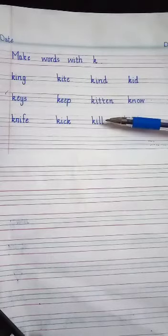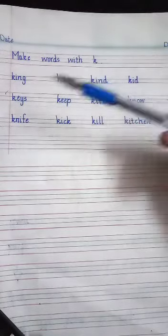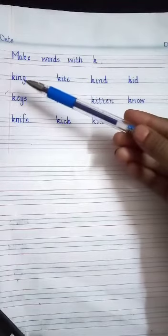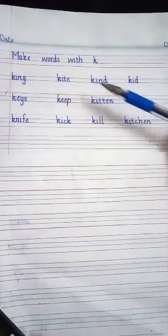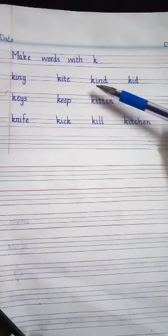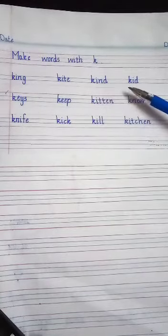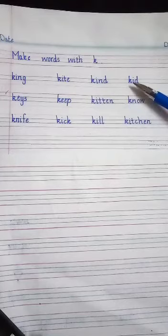Then, I have written some words for you. Let's read the words. King. K-I-N-G. King. Kite. K-I-T-E. Kite. Kind. K-I-N-D. Kind. Kid. We can sound it. K-I-Kid. Kid.